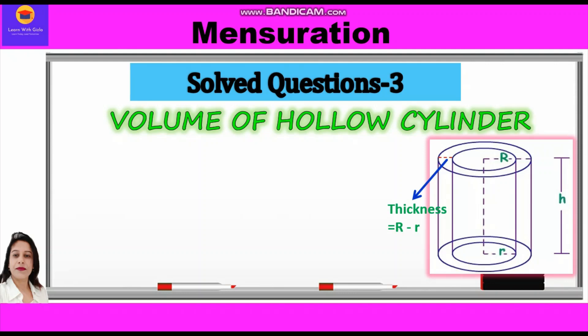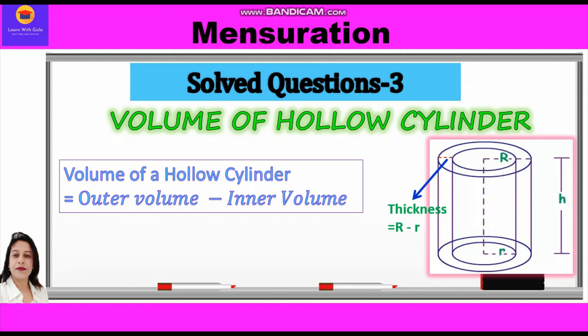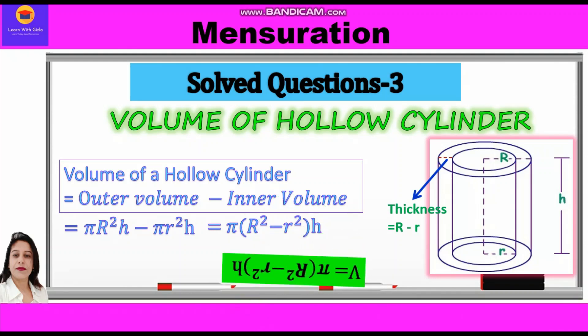Now let's revise the formula for the volume of a hollow cylinder. Volume of hollow cylinder is always outer volume minus inner volume, which is equal to π·R²·h minus π·r²·h. Taking π and h common, we write π(R² − r²)·h. So finally the formula for the volume of a hollow cylinder is π(R² − r²)·h.